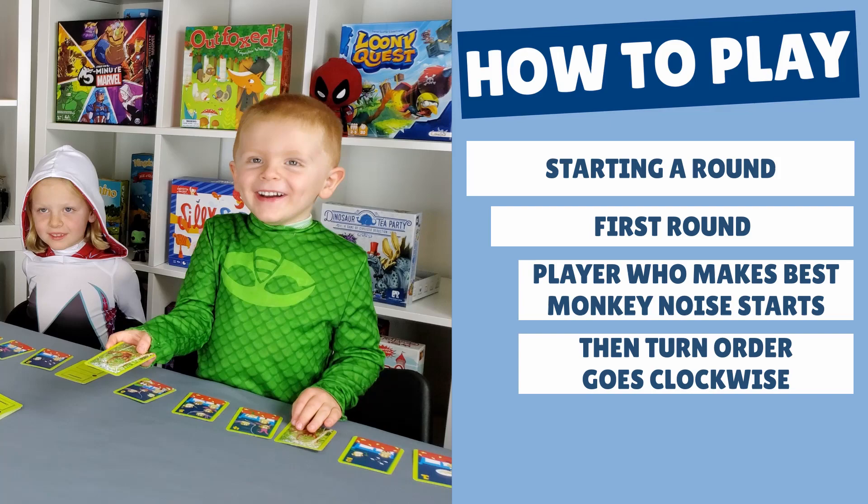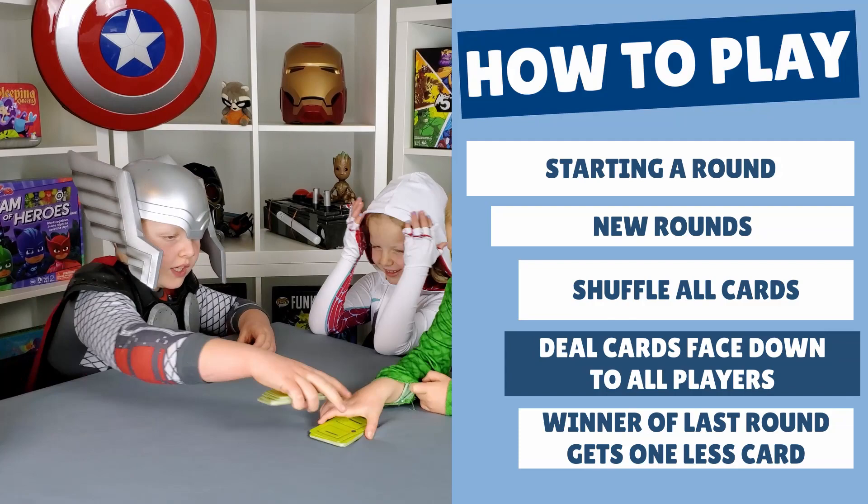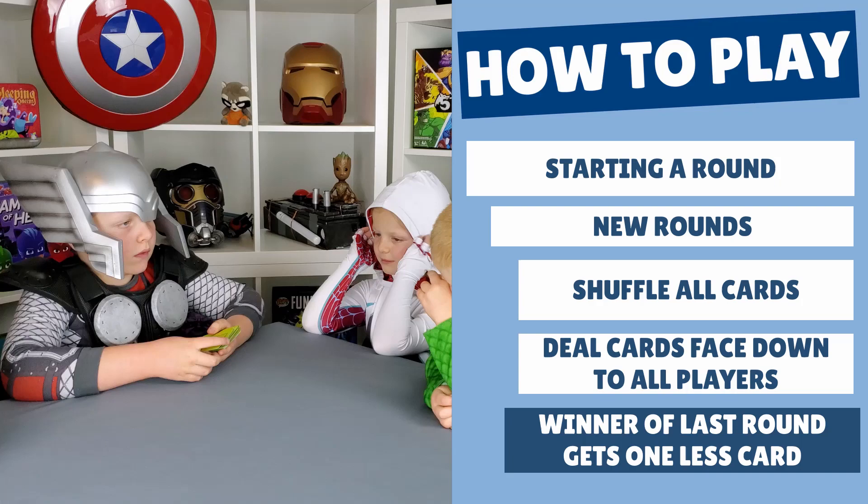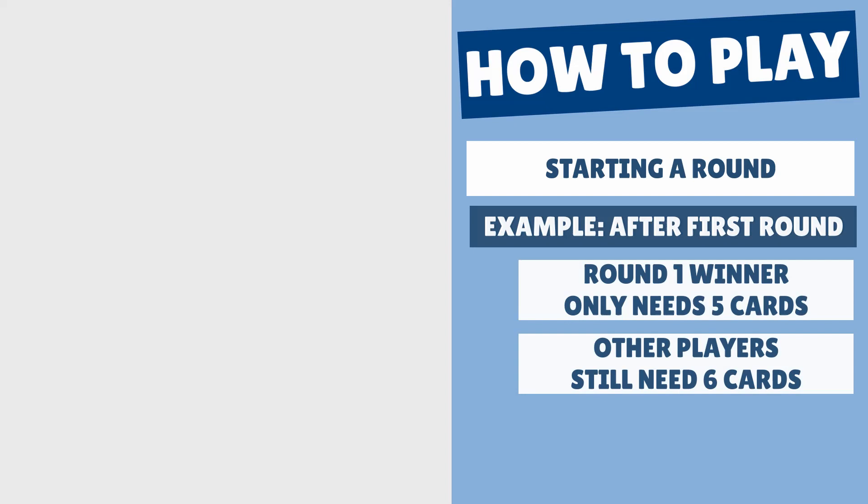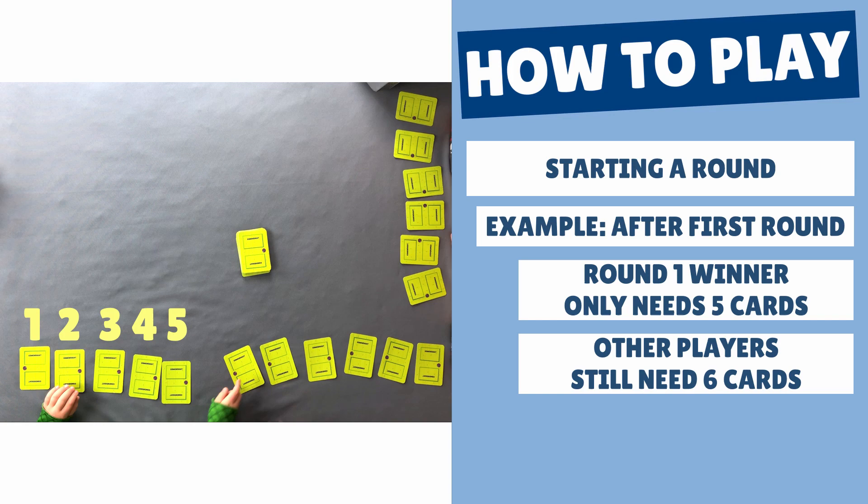To start the next round, shuffle all the cards back together. Then deal cards face down to each player again. But the winner of the last round will get one less card than they had before. So after the first round, that round's winner will only have five cards in front of them and everyone else will still have six. The first round winner will only need to get one through five in the next round. They won't need the number six card anymore.